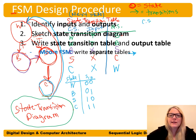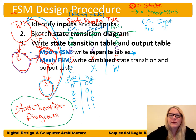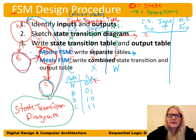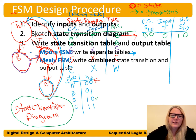Now we take our state transition table and encode it. We have current state bits S1:S0 and our input T, and we write the next state as S1:0 prime to indicate it's the next state. Wherever we see W we put 00, so for the top row: if current state is W (00) and T is 0, the next state is the shower state (SH), encoded as 10.